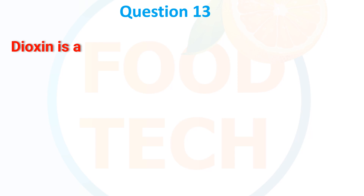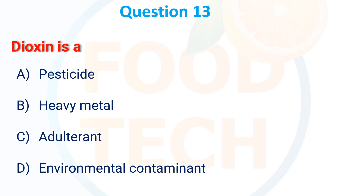Dioxin is a: A. Pesticide, B. Heavy metal, C. Allergen, D. Environmental contaminant. The correct answer is environmental contaminant.